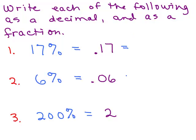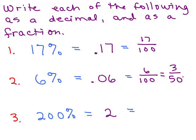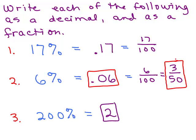Now let's write each of these as fractions. 17 percent means 17 over 100, so we write 17 over 100. 6 percent means 6 over 100 — is that reduced? No. Divide the numerator and denominator by 2, which gives you 3 fiftieths. For 200 percent, you can't simplify 2 any further — so 2 is the answer whether you're writing it as a decimal or as a fraction. To summarize: 6 percent is 0.06 as a decimal and 3 fiftieths as a fraction; 17 percent is 0.17, also written as 17 hundredths.